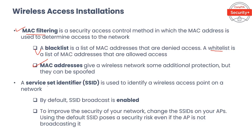Another best practice is disabling SSID broadcast. An SSID, or Service Set Identifier, is used to identify a wireless access point on the network. The SSID is transmitted so that wireless stations searching for a network connection can find it. By default, SSID broadcast is enabled — when you disable this feature, the SSID configured in the clients must match the SSID of the AP, otherwise the client cannot connect. Having SSID broadcast enabled makes your AP visible to any device searching for a wireless connection. To improve security, change the SSIDs on your APs — using the default SSID poses a security risk even if the AP is not broadcasting.